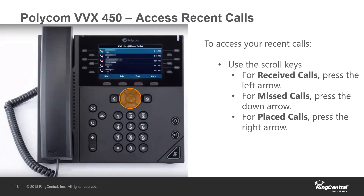Moving on, the scroll and select tools also access your call log. When the phone is idle, press the left arrow key to see received calls. Press the down arrow to show all your missed calls — when you miss a call you'll get a notification, and pressing down opens the missed call log and clears that notification. The right arrow shows your most recently placed calls. That list holds up to 100 calls and you can clear it, or it will clear automatically after 100 calls.